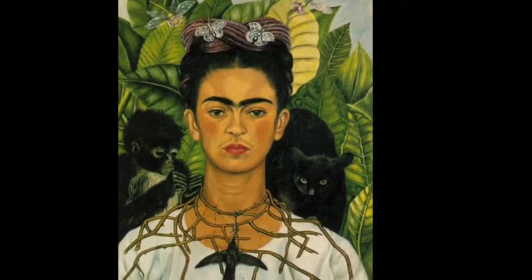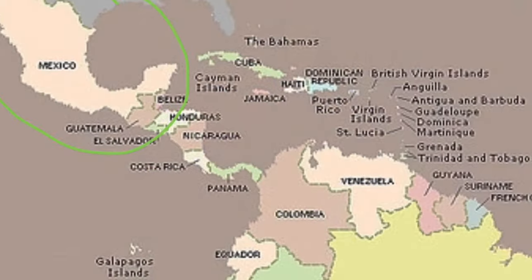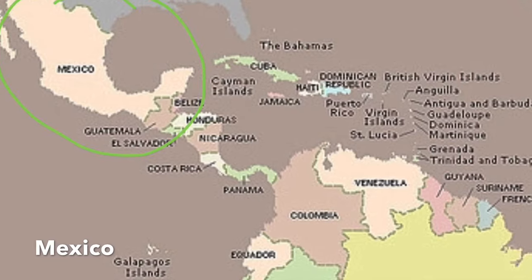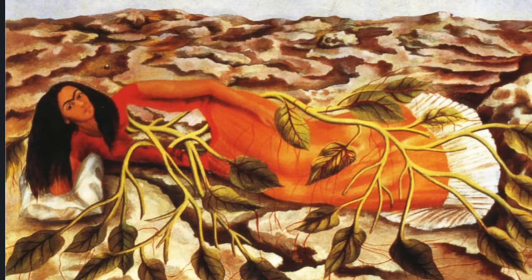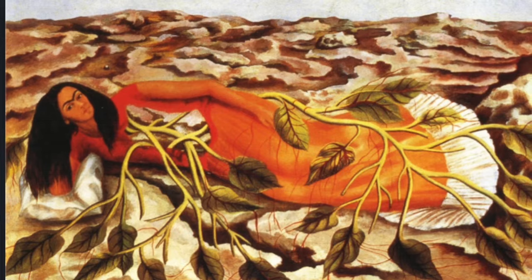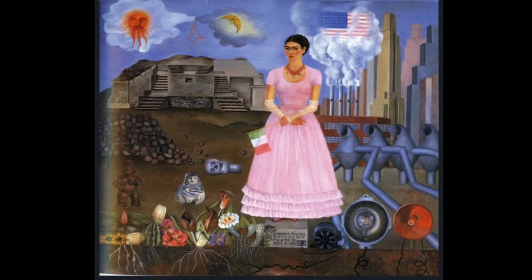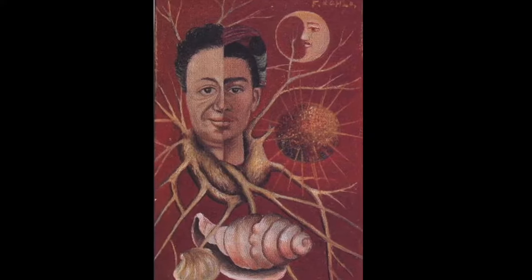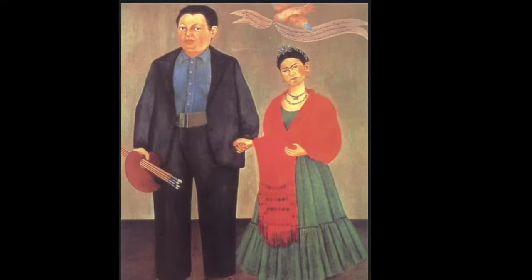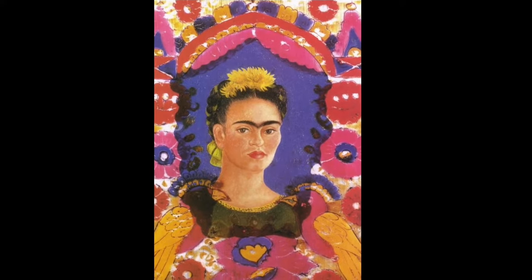The final artist is Frida Kahlo, one of the most influential portrait artists, and she is from Mexico. She uses visual symbolism to show physical or mental struggles. Her artwork is narrative and she uses nature and artifacts from Mexico to represent stories. She is also known for being married to Diego Rivera, who also appears in her artwork.